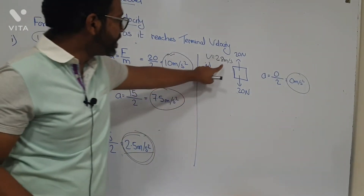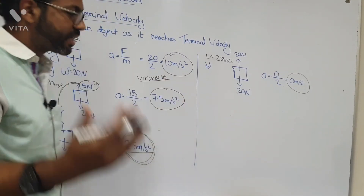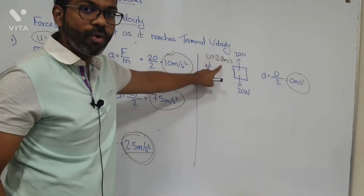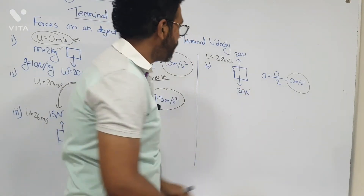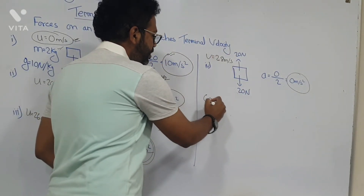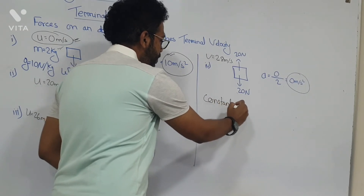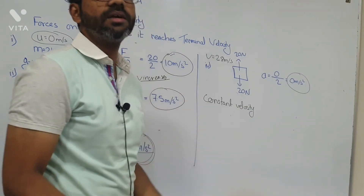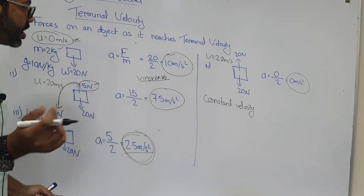The values of 20, 26, and 28 m/s are all random values I have taken — I have not calculated them, just to explain the concept to you. The velocity kept on increasing and at one point it stopped increasing because the acceleration became zero. The object kept on moving with a constant velocity.